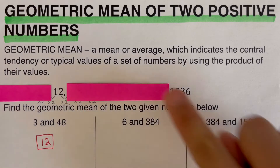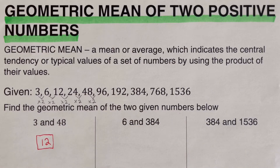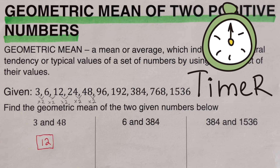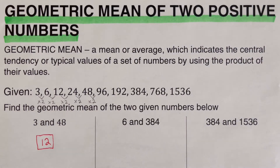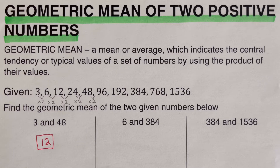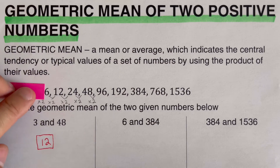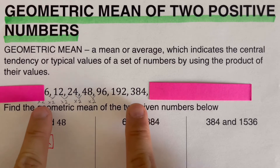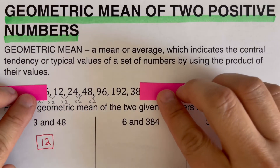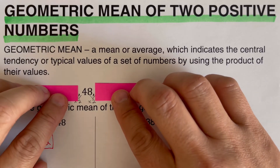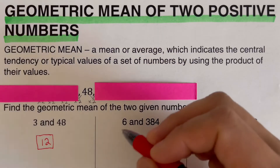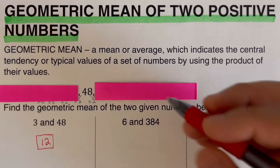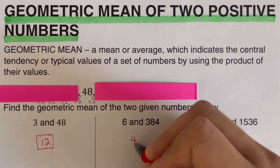Pause the video and try these two problems on your own, then check your answer. For the first problem, we determine the geometric mean between 6 and 384. Looking at the geometric sequence, 6 is here and 384 is further along. The middle number between these two is 48, so the geometric mean between 6 and 384 is 48.